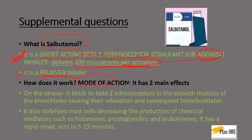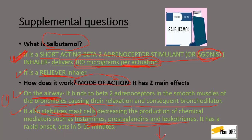Mode of action — how does salbutamol work? It has two parts. First, it acts on the airway: in asthma the bronchioles constrict, so salbutamol dilates or relaxes them, helping the patient to breathe easily. Second, it stabilizes mast cells, which are responsible for secreting histamines, prostaglandins, and leukotrienes. When it stabilizes them, the secretion of these chemicals reduces, hence reducing the chances of an asthmatic attack. So: one, it is a bronchodilator; two, it is a mast cell stabilizer.